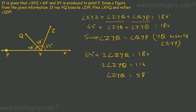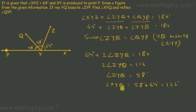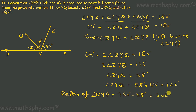Angle XYQ would be 58 degrees plus 64 degrees, which comes to 122 degrees. Now XYQ is found out. QYP is 58 degrees, so the reflex of angle QYP would be 360 degrees minus 58 degrees, which is 302 degrees.